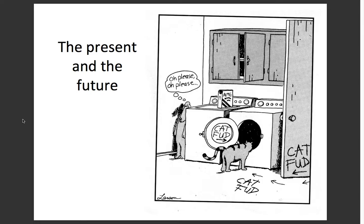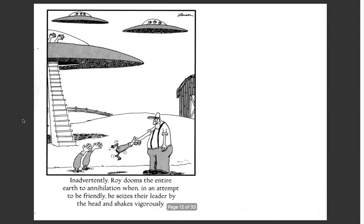Larson would also play around with the future. Here's this moment, this dog sort of waiting for this cat to do something. The past doesn't really matter — typical dog and cat stuff. But what we piece together about the future is what's going to happen next when that cat goes into the dryer. Likewise, here: "Inadvertently, Roy dooms the entire earth to annihilation when, in an attempt to be friendly, he seizes their leader by the head and shakes vigorously." What we're really compelled to envision is what happens next.